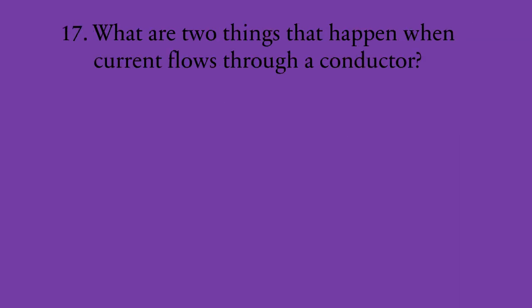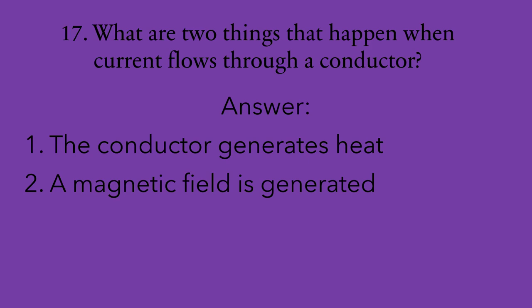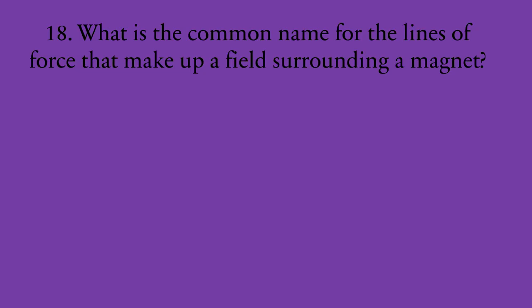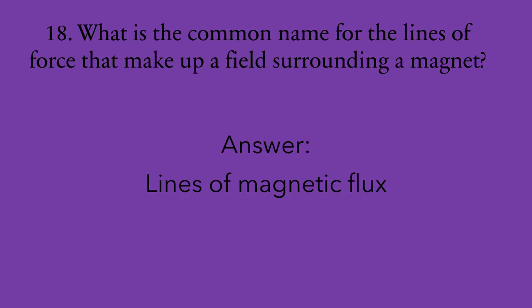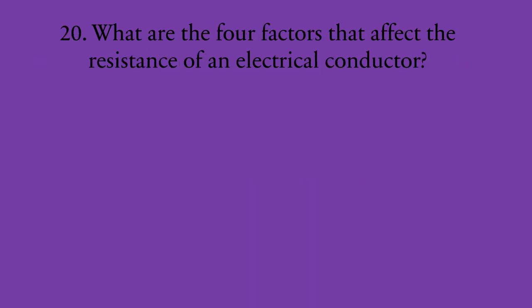Number seventeen: what are two things that happen when current flows through a conductor? One, the conductor generates heat. And two, a magnetic field is generated. Number eighteen: what is the common name of the lines of force that make up a field surrounding a magnet? They're called lines of magnetic flux. Number nineteen: what is the concept that describes the relationship between electricity and magnetism? The answer is electromagnetism.